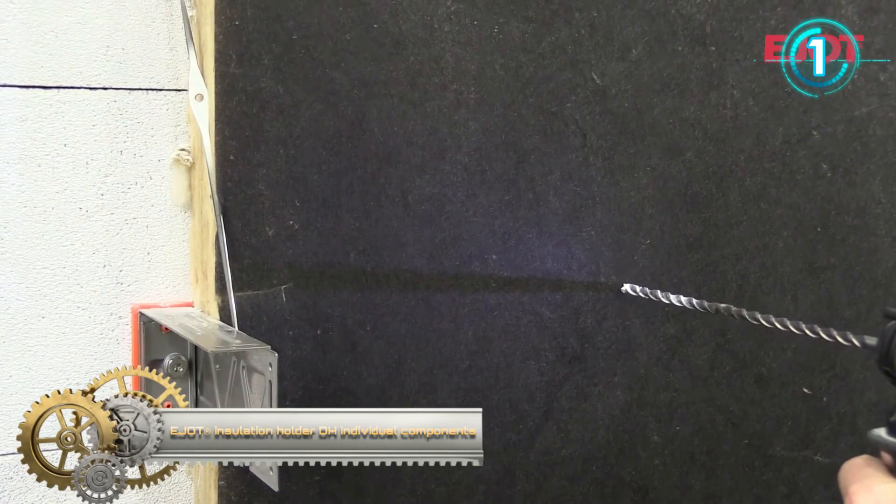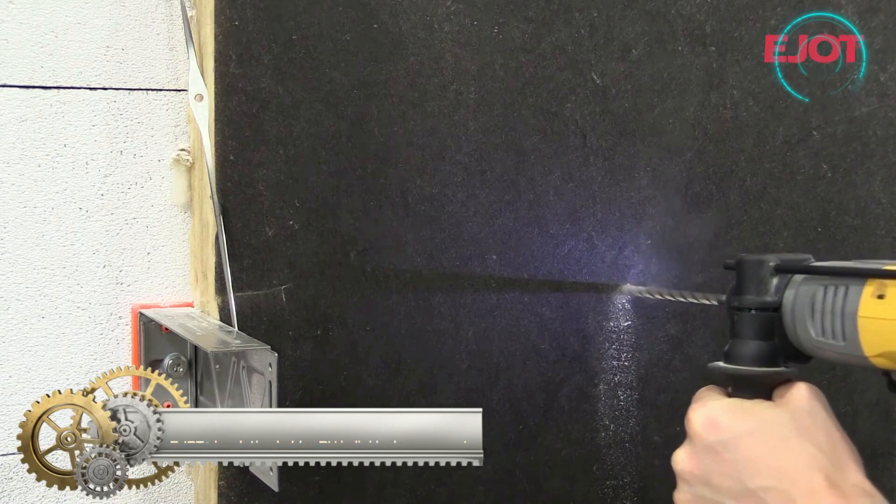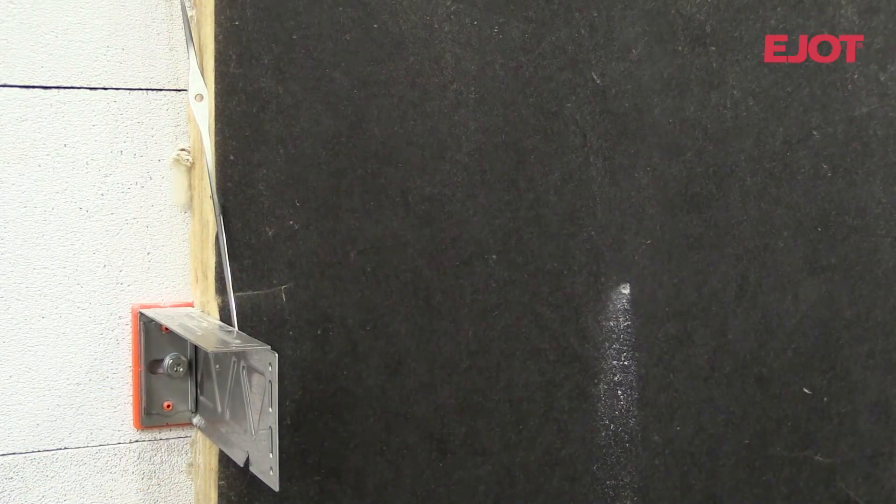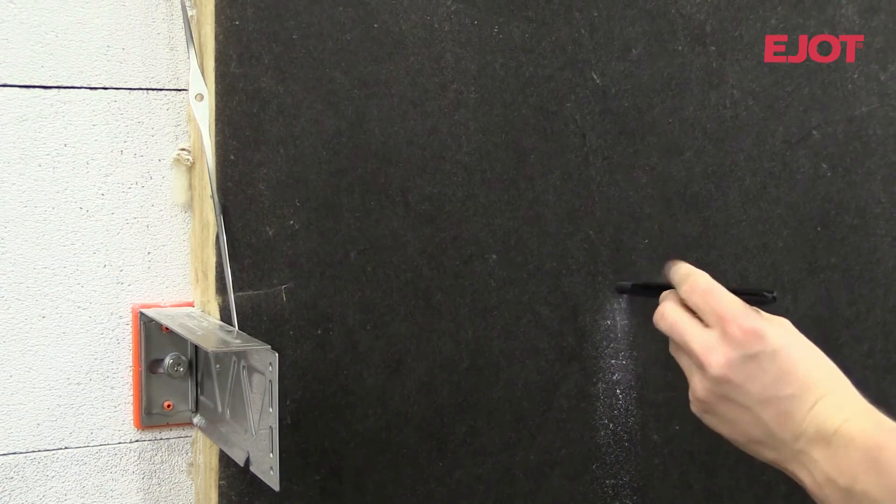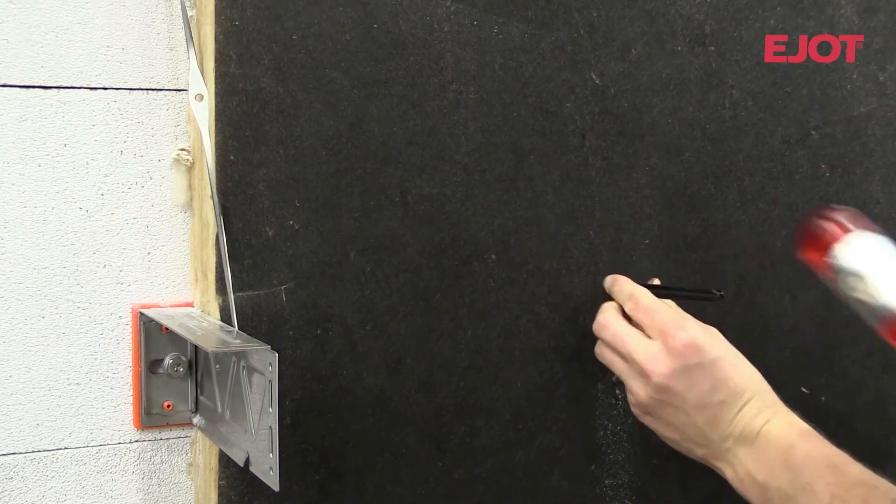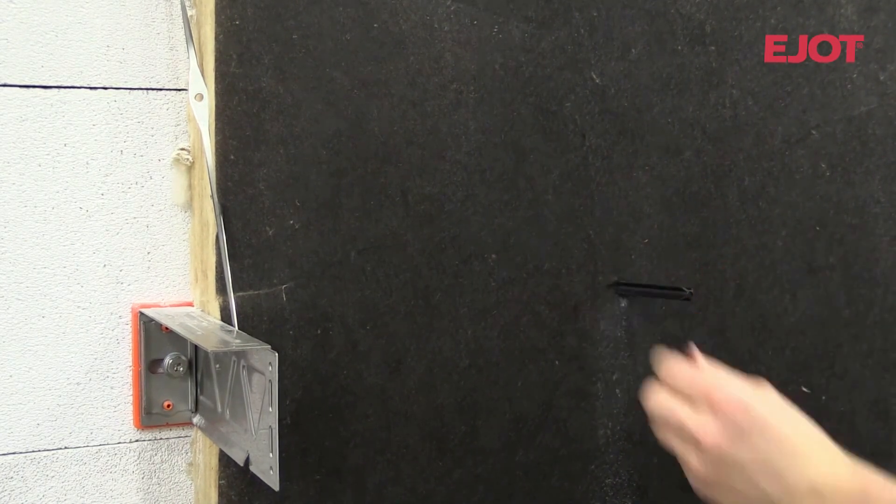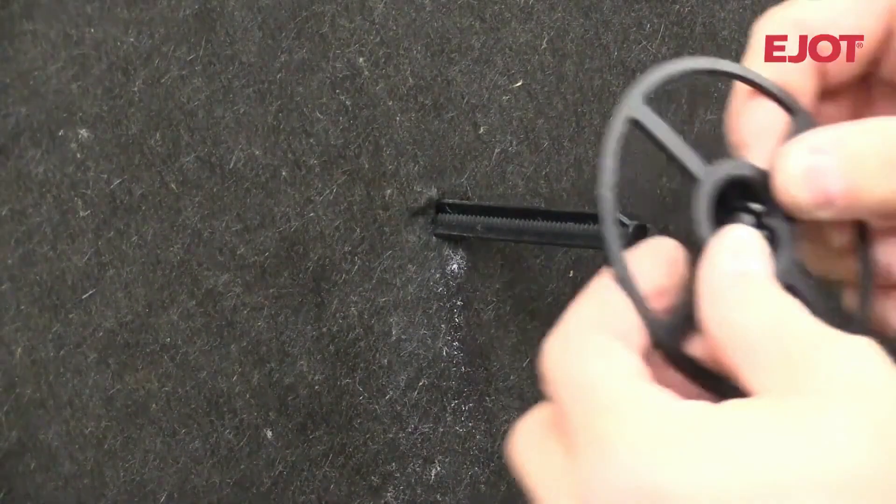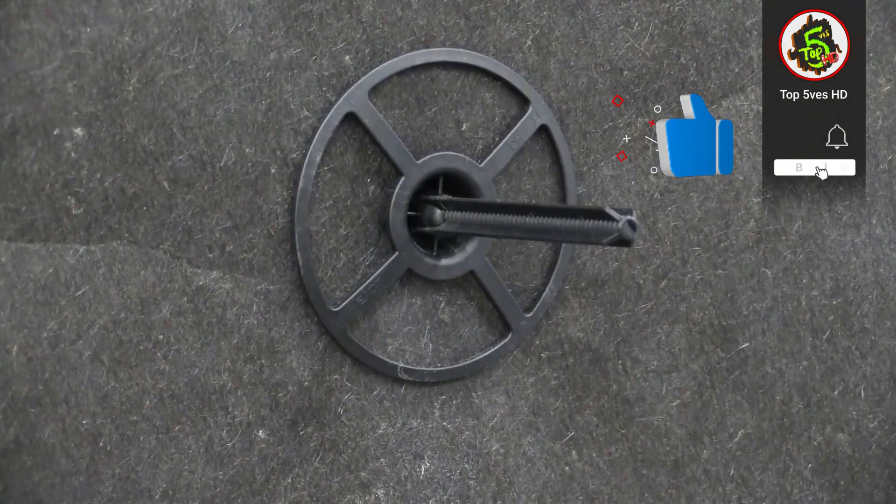Edge insulation holder DH. Individual components for the installation of two-ply insulation. Additional stress plates are required. The practicability depends on the respective insulation properties and needs to be tested on site. Rotary hole drilling is obligatory in aerated concrete and perforated brick masonry. Prevents the quilt effect due to retrofitting the washer.